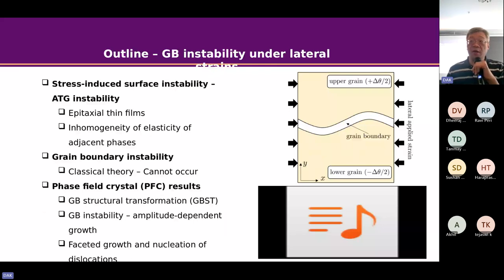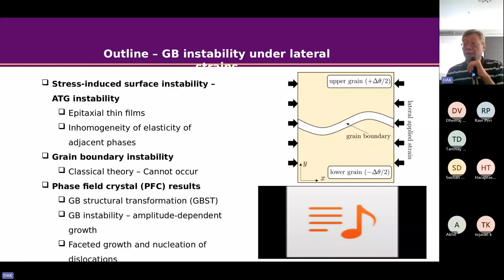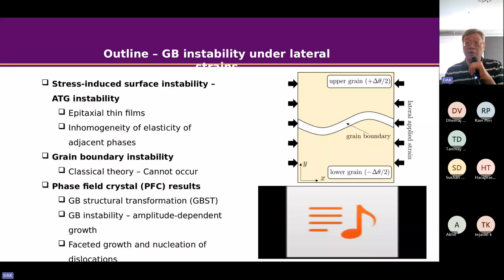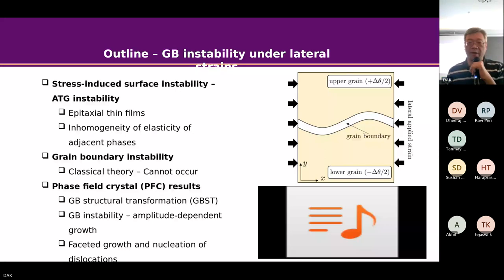The second part is still relevant to material science modeling. If you have a bi-crystal, and I compress the bi-crystal laterally, the question is whether the grain boundary between the bi-crystal is going to be stable or unstable. According to the classical theory, the planar boundary between this bi-crystal is going to be stable — there is no perturbation. But if you look at the atomic scale and consider more physics, it could actually happen. If we have time, I'll talk more about that.